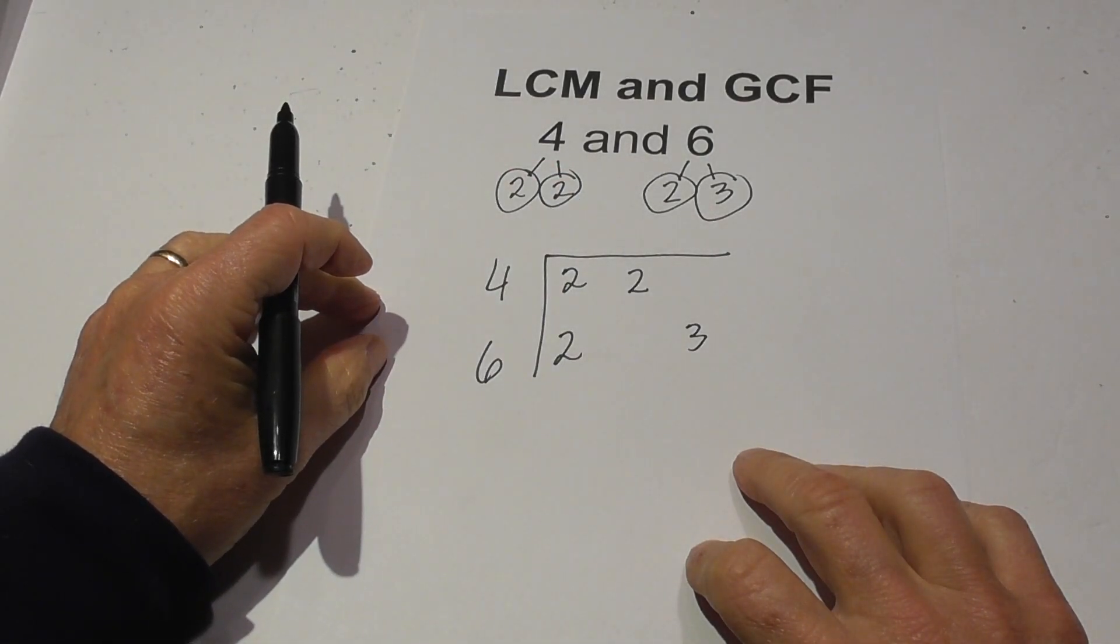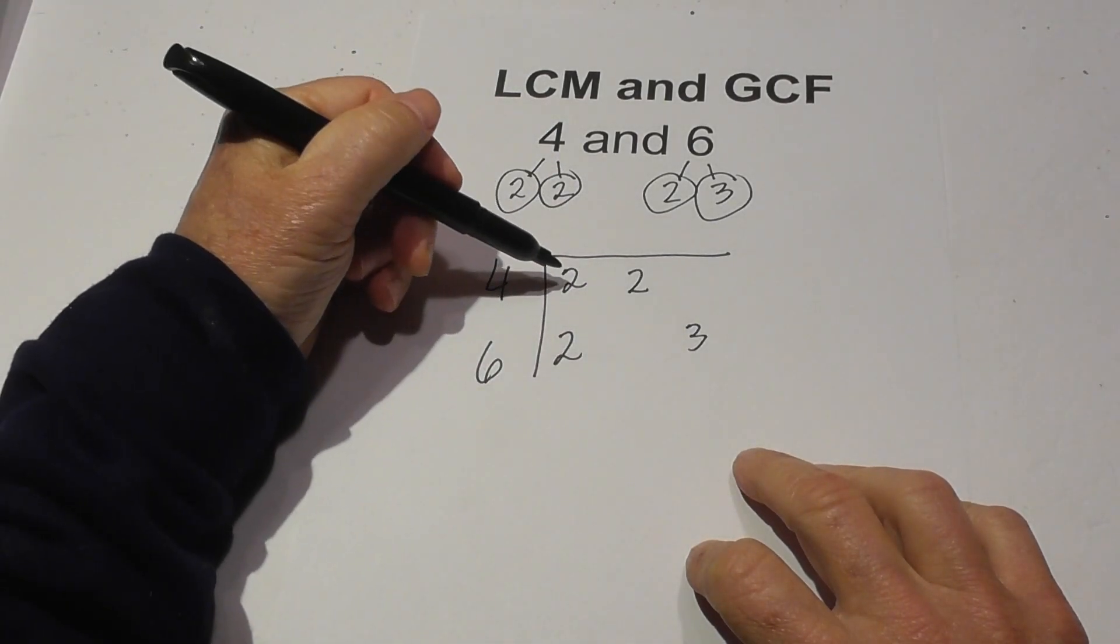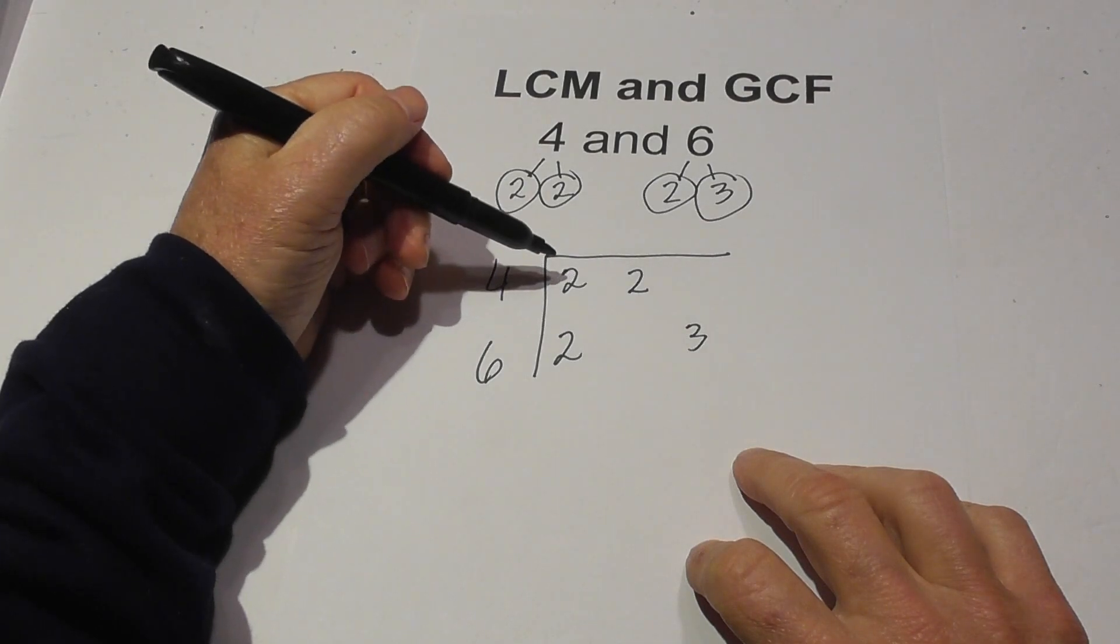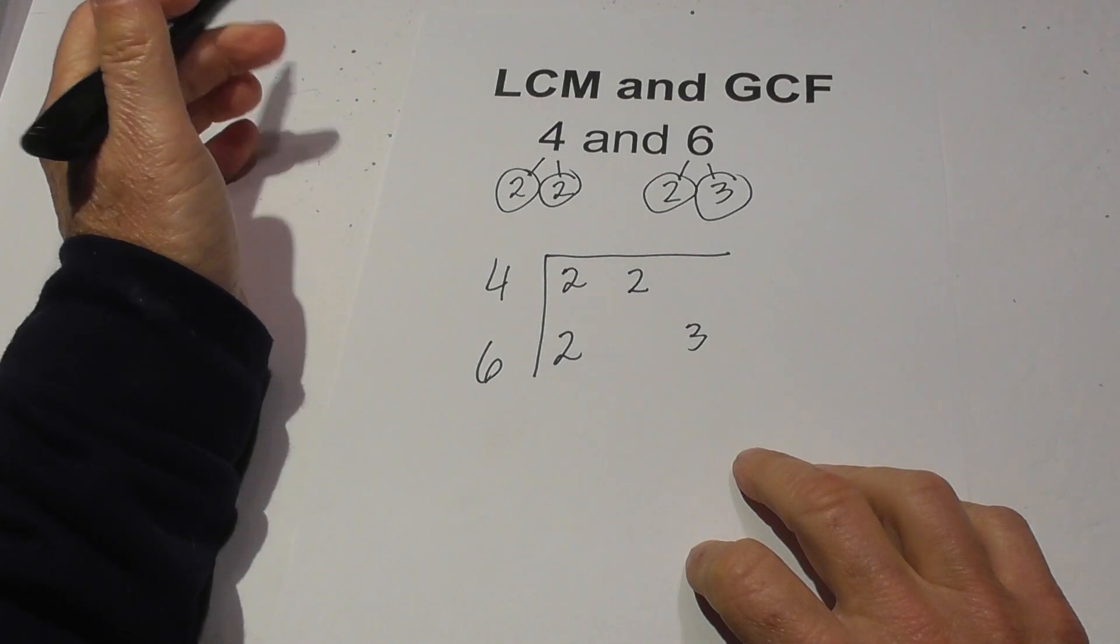And so now the rule for the LCM basically you multiply all these numbers together except you have one rule. If you have more than one number then you only multiply it once. And so this chart sets up everything nice and neat for you.